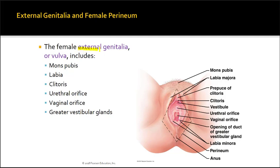The external genitalia include the mons pubis (the elevated fatty area at the top), the labia majora and minora, the clitoris (which contains similar erectile tissue to that in males), the urethral orifice (opening for urination), the vaginal orifice, and the vestibular glands, which are found deeper within and produce secretions for lubrication.